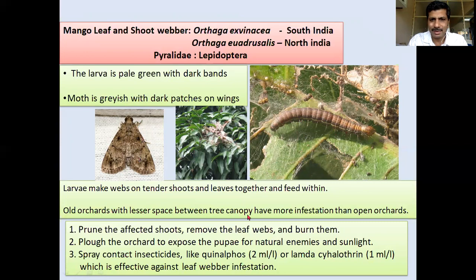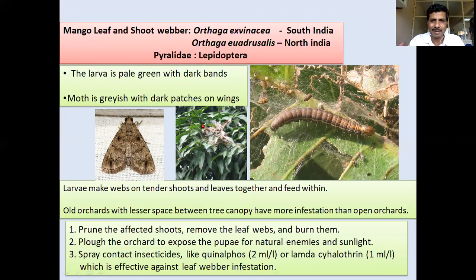As with leaf hoppers, cutting the central branch allows good light penetration. For management: prune the affected shoots, remove the leaf webs and burn them. You can identify this type of leaf webbing and burn it. Plough the orchard to expose pupae to natural enemies and sunlight, causing partial reduction in population. If required, spray phenthoate at 2 ml per liter or lambda-cyhalothrin at 1 ml per liter of water to reduce incidence.